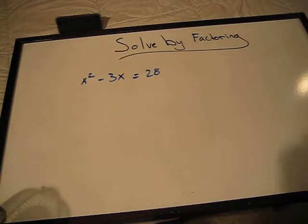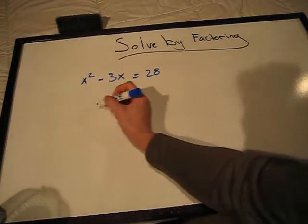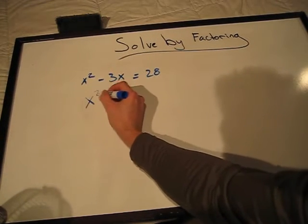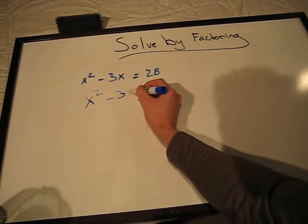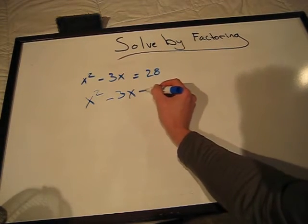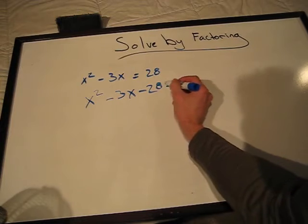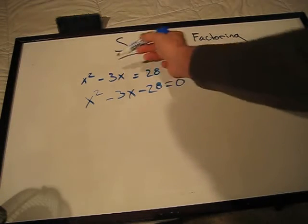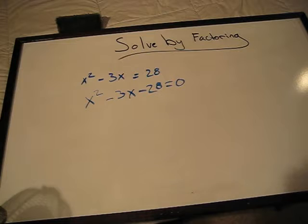To do so, first we need to rewrite this equation and set it to zero. So we'll have x² - 3x - 28 = 0. We just moved the 28 from one side to the other.